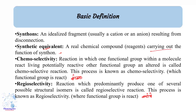Chemoselectivity refers to a reaction in which one functional group within a molecule reacts while leaving other potentially reactive functional groups unaltered — in short, which functional group reacts. Regioselectivity refers to a reaction which predominantly produces one of several possible structural isomers — in short, where the functional group reacts.